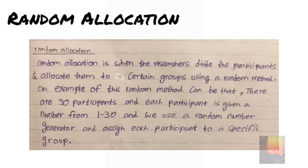An example of this random method can be that there are 30 participants and each participant is given a number from 1 to 30. And we use a random number generator and assign each participant to a specific group.